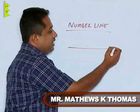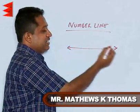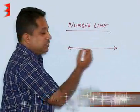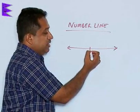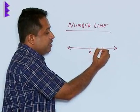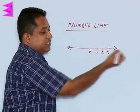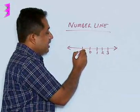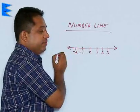A number line is a line which extends indefinitely in both directions with 0 in the center and positive values on the right. This extends up to infinity and negative numbers on the left.